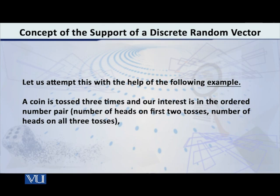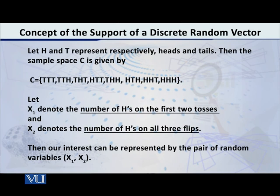Suppose that a coin is tossed three times, and our interest is in the ordered pair: the number of heads on the first two tosses, comma, the number of heads on all three tosses. To proceed, we will first construct the sample space, which we may denote by capital C, of our experiment.